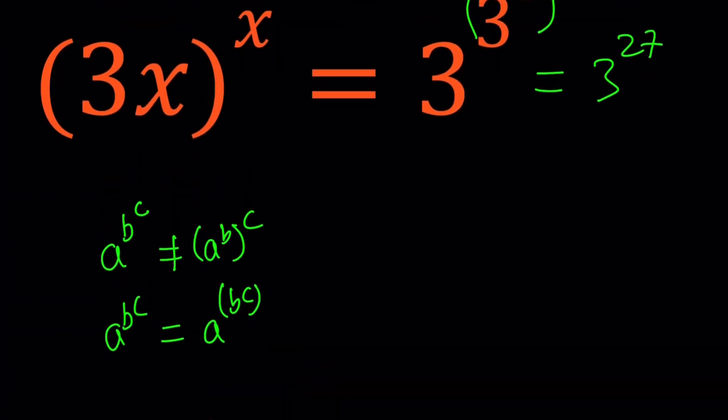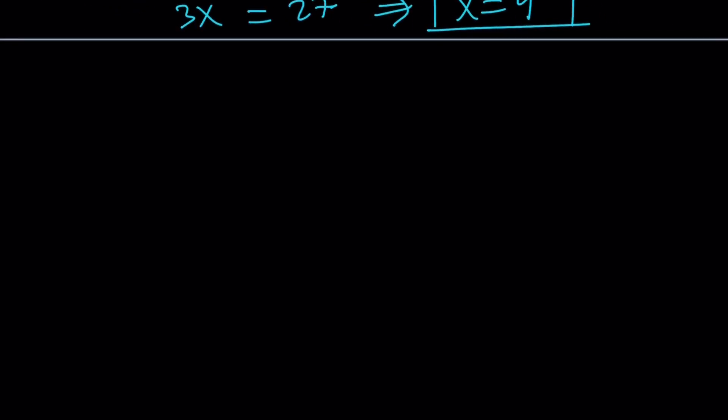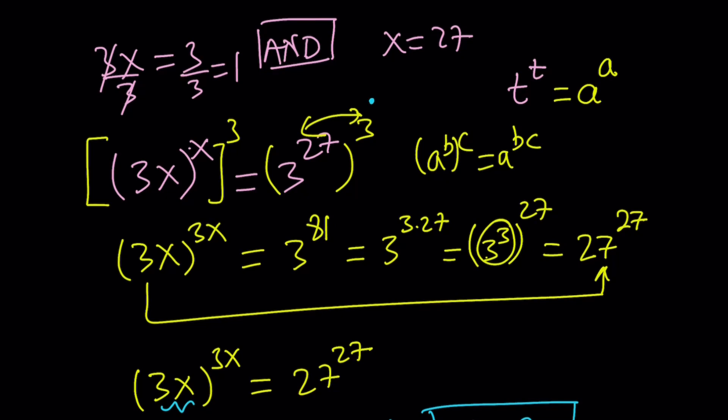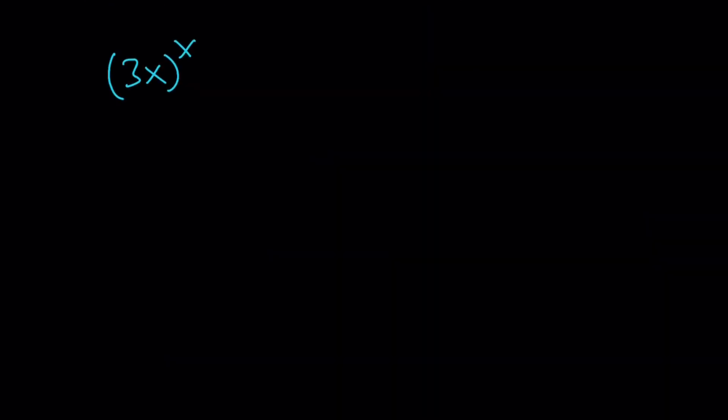Obviously, I told you I was going to show you two approaches. So let's see what the other approach might look like. We got (3x)^x before we raised it, before we raised both sides to the third power. We had (3x)^x equals 3^27. When I compare the bases and the exponents, it didn't work because the base is greater, assuming x is positive. If we can set them equal, like if they're on equal grounds, then we'll get a solution.